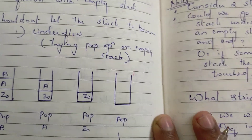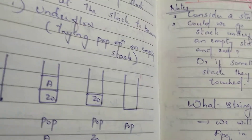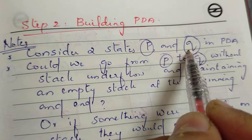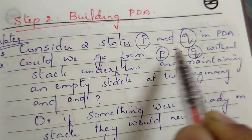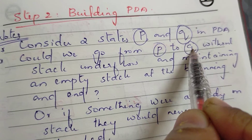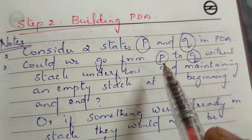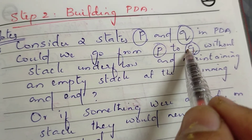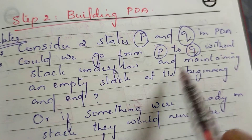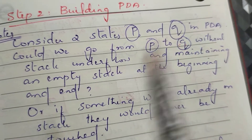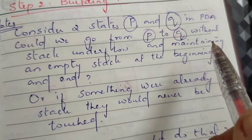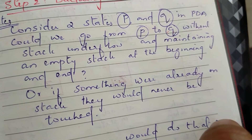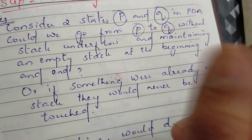The second step is Building the CFG from PDA. How do you build PDA? How do you build P and Q? If you put P and Q, there is an underflow condition. PDA is underflow. When we go to P and Q, there is an underflow condition. If you put an empty stack, you will end. If we put in a stack, we will not have any elements.